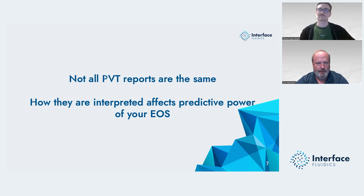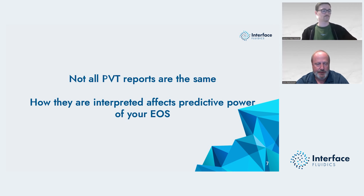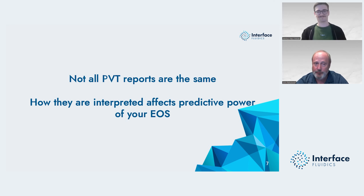There is variability in PVT reports — variability in reporting format, and historically also variability in the methods of measurements or what measurements are presented. It's important to look at the vintage of your PVT report, as well as try to understand exactly what the numbers in that report represent. Some reports do not tell you everything, so be a little cautious with some of the numbers.